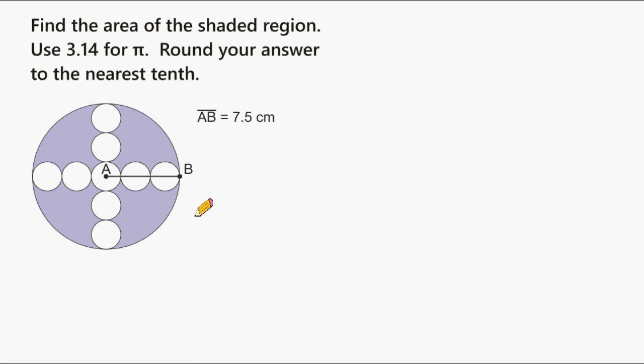So the strategy anytime that you see a problem asking for the area of a shaded region is to find the entire area of the shaded and unshaded all combined, and then subtract from that the area of the unshaded region, and what you will have remaining is the shaded region of the figure. So let's start by finding the area of this main figure, which is a circle.